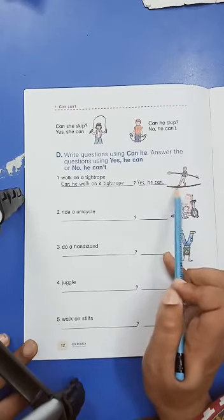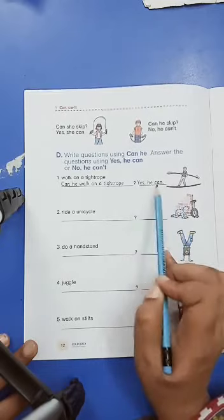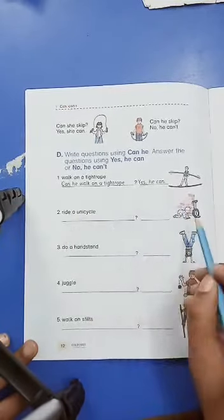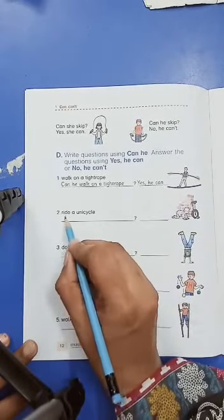When you will see him, he can run, he can walk on the tightrope, so we have answered yes he can. Ride a unicycle, use a simple example and look at the picture. We will use a sentence: can he ride a unicycle?